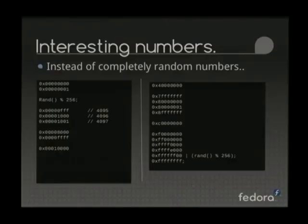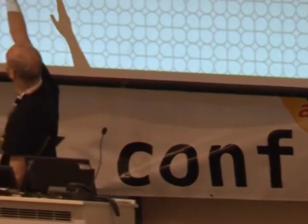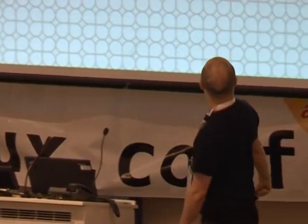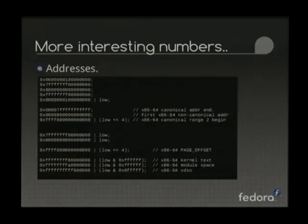The sanitize pointer points to a function where you sometimes want to special-case certain things. For example, on mmap, if it's an anonymous mapping, you don't want a file descriptor argument, so we put minus one in there, and we do some magic with aligning. Not every system call has one of these sanitize routines. Instead of completely random numbers, we use some really weird-looking numbers — trying to get off-by-ones and strange-looking values. There are also 64-bit variants, and they use addresses as well, including kernel addresses, kernel module addresses, and the VDSO address.